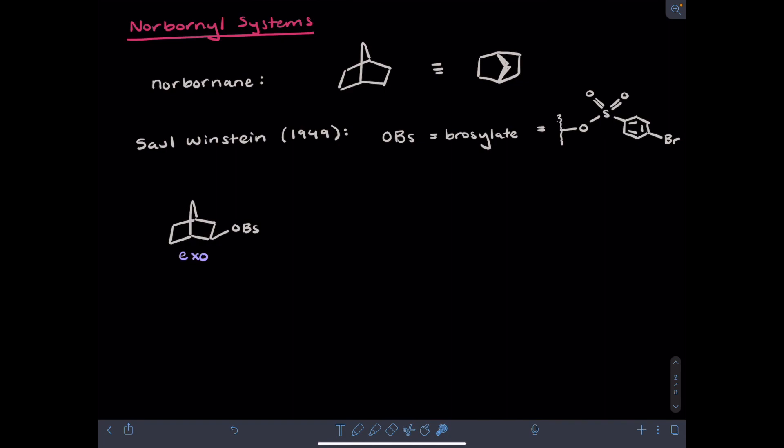This particular geometry in which the leaving group points up, and the CH2 bridge points up as well, is known as the exo geometry. Winstein looked at solvolysis reactions, which would proceed by an SN1 mechanism. In this reaction, the acetate replaces the leaving group to generate this substitution product.